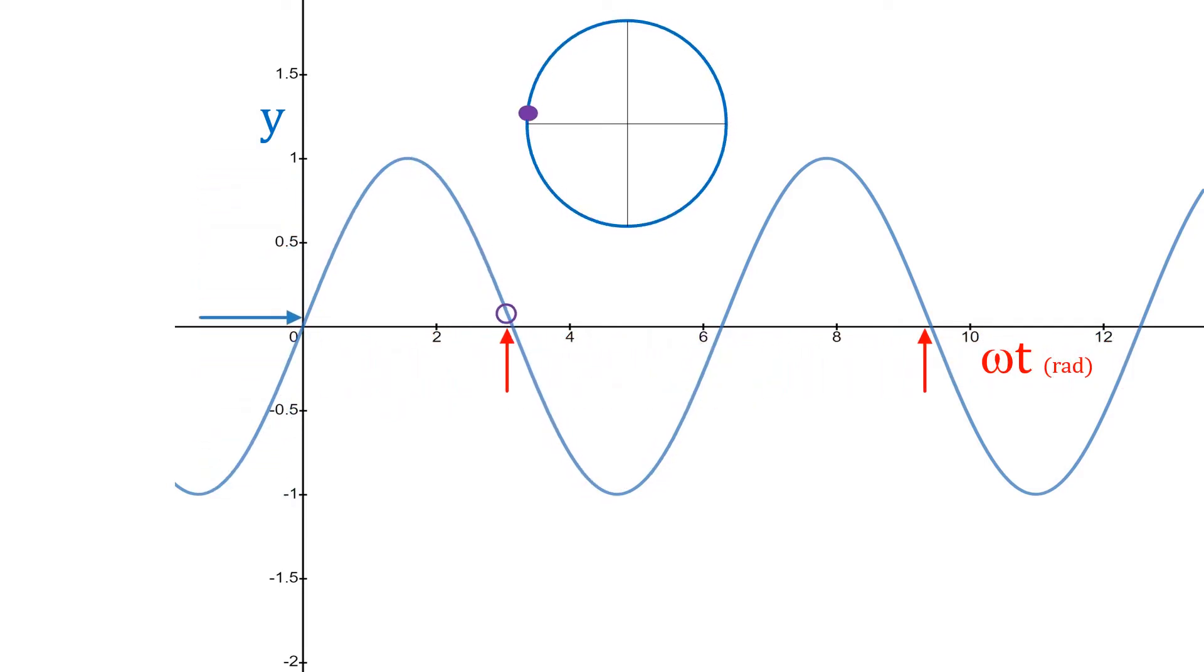And at the top we have the unit circle spinning around, which is the tip of the hypotenuse.